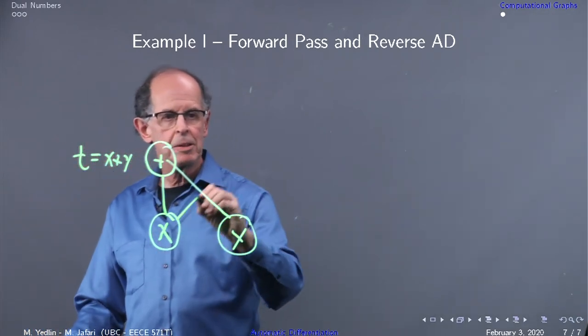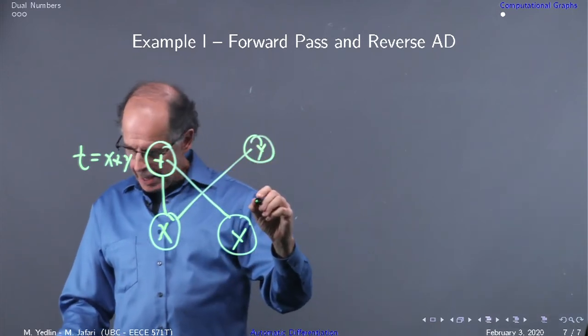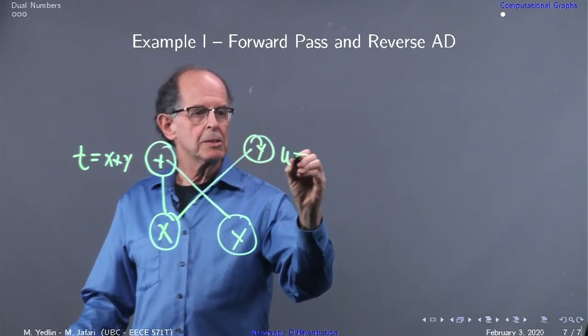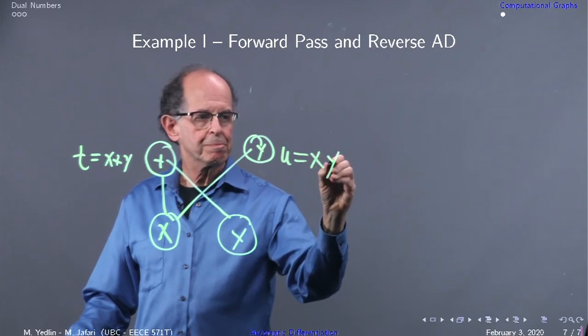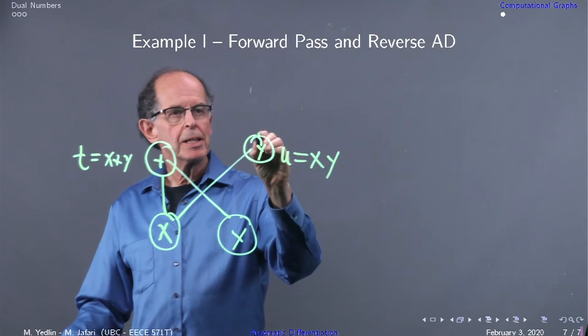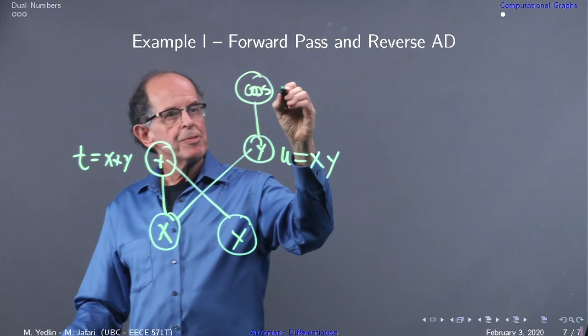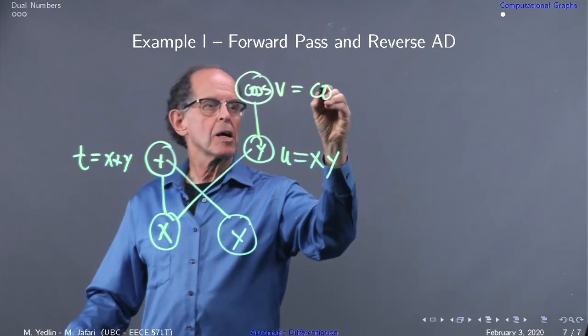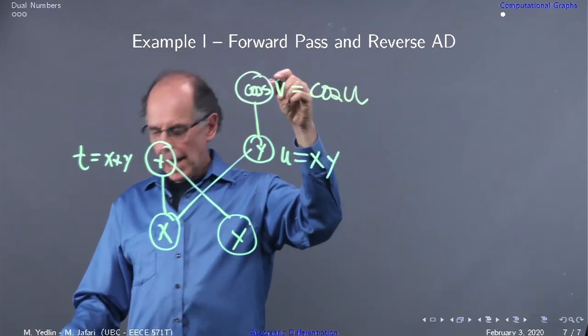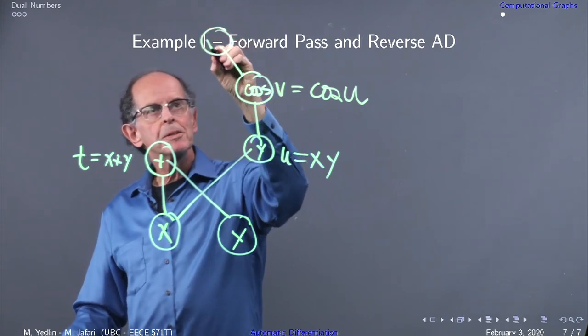To make it interesting, we'll have multiplication here—u equals xy. Now we're going to take u and put it into a cosine, so v equals cosine(u).